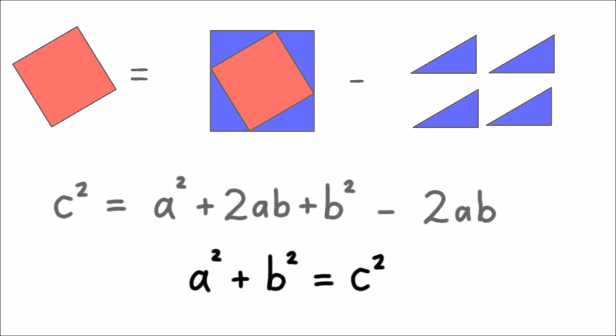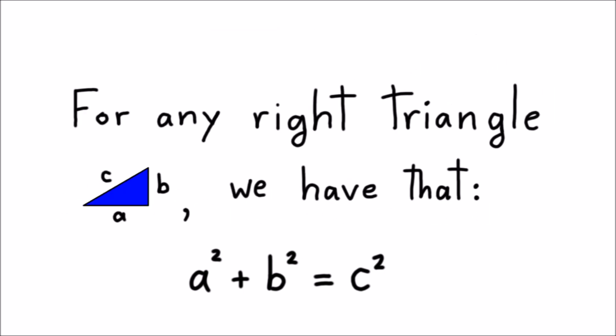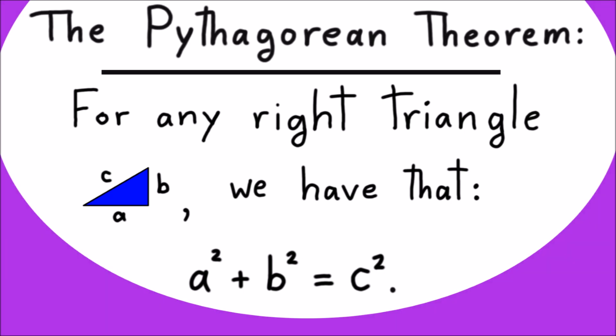We've just shown that this rule is true for all right triangles. This is called the Pythagorean theorem, and we can use it to find the distance between any two points on our infinite piece of graph paper.